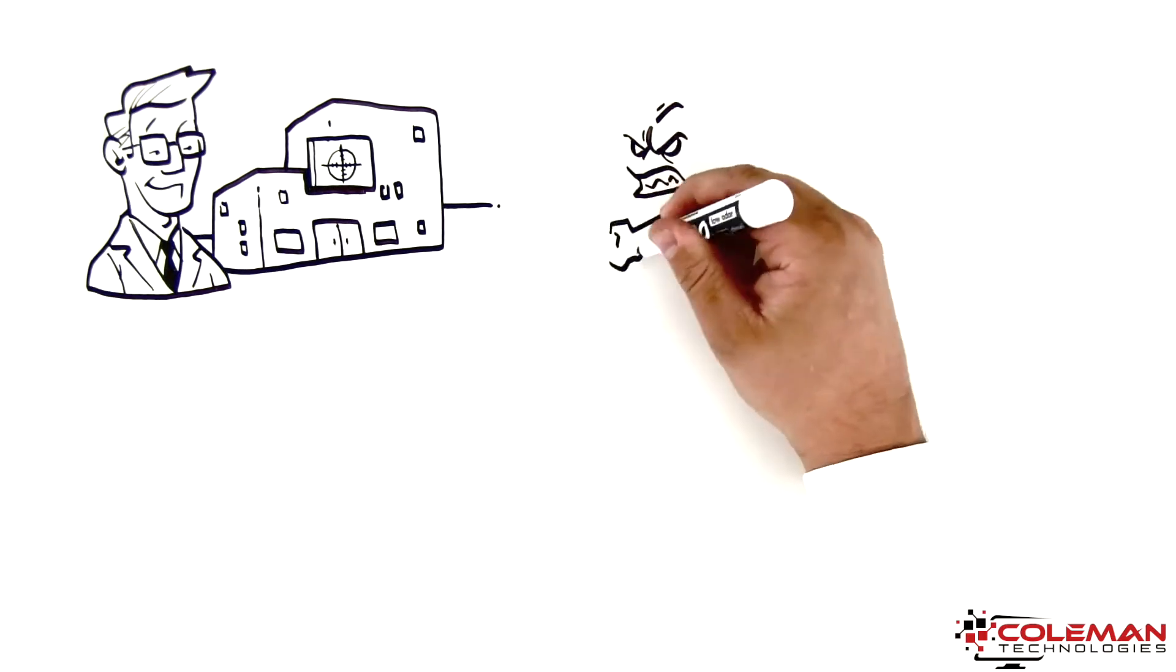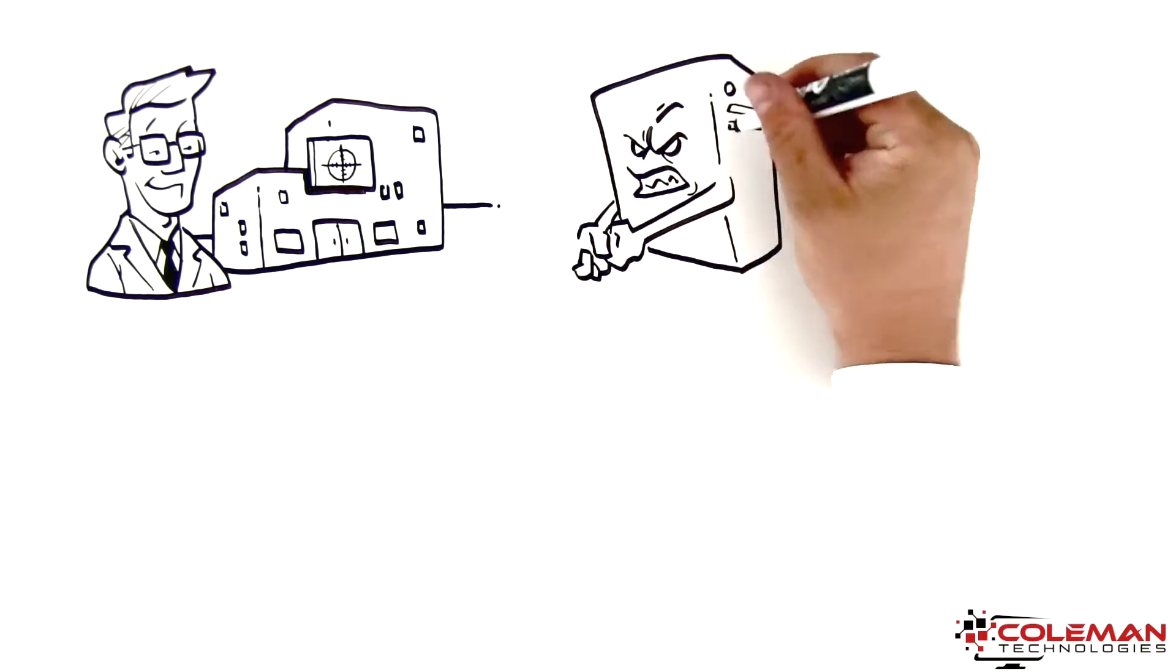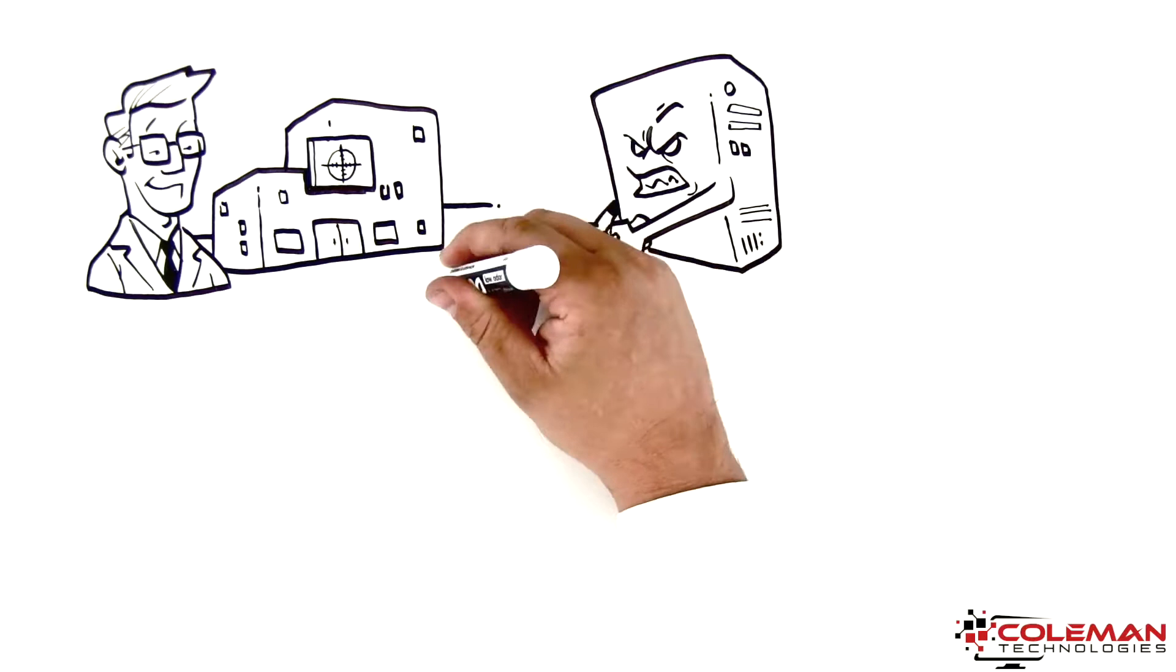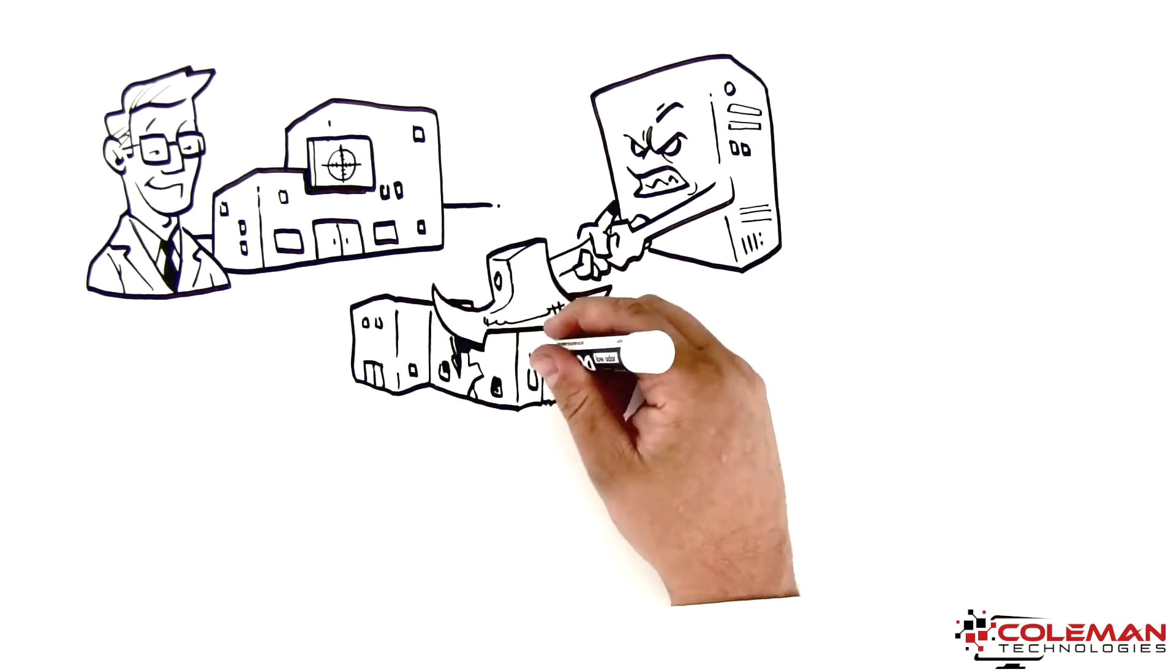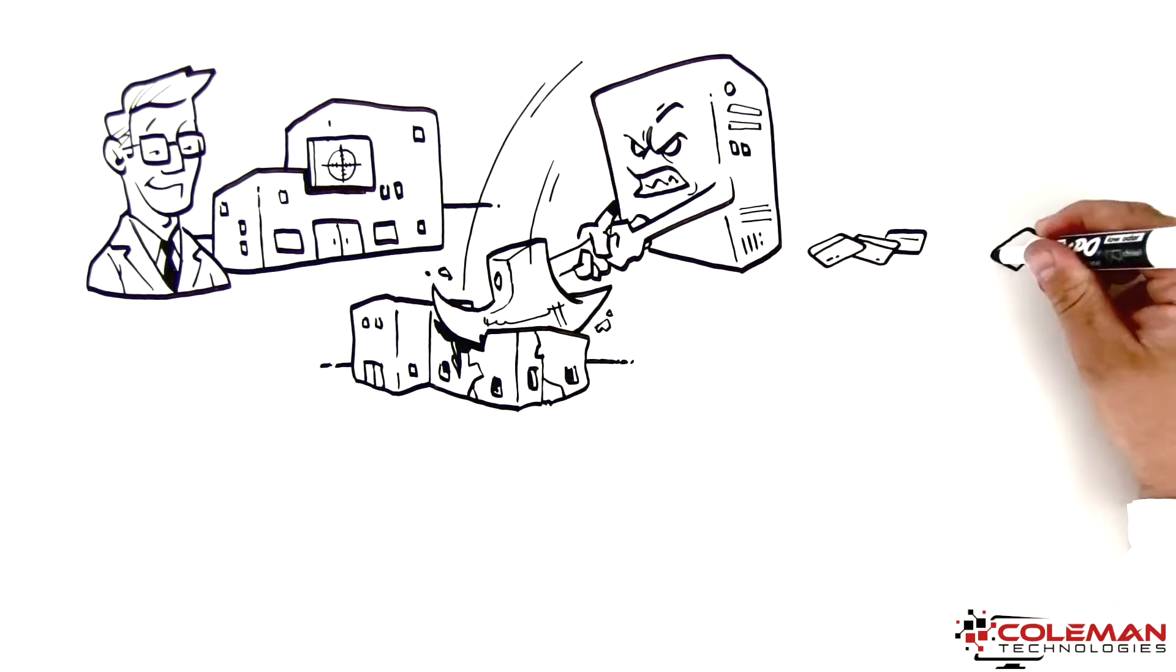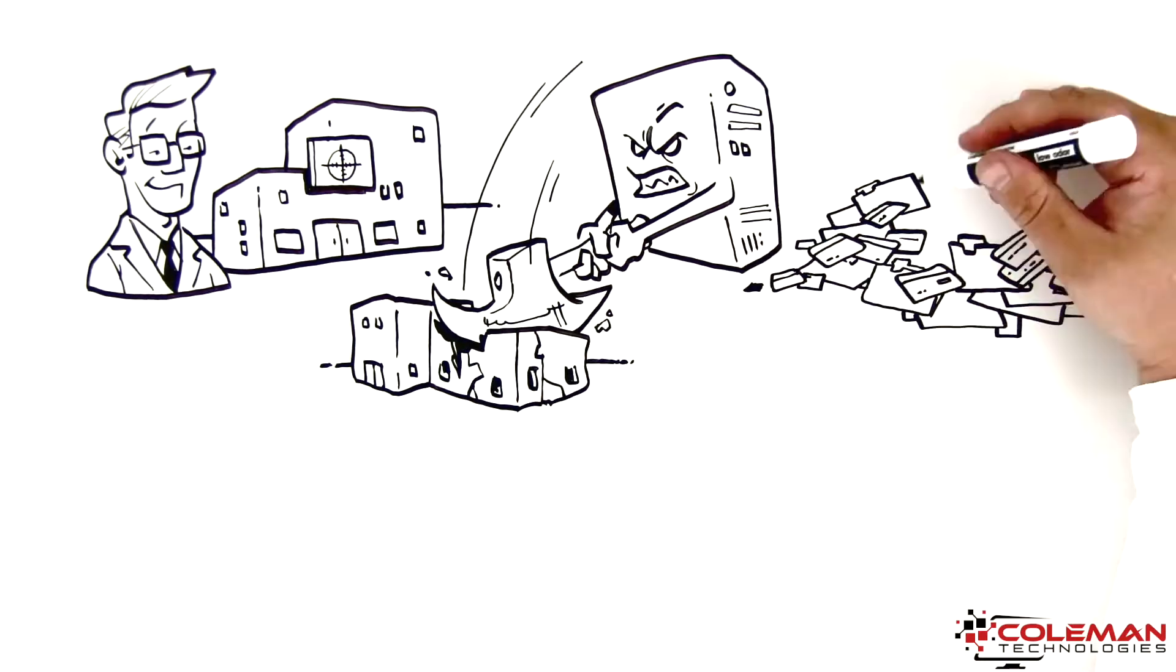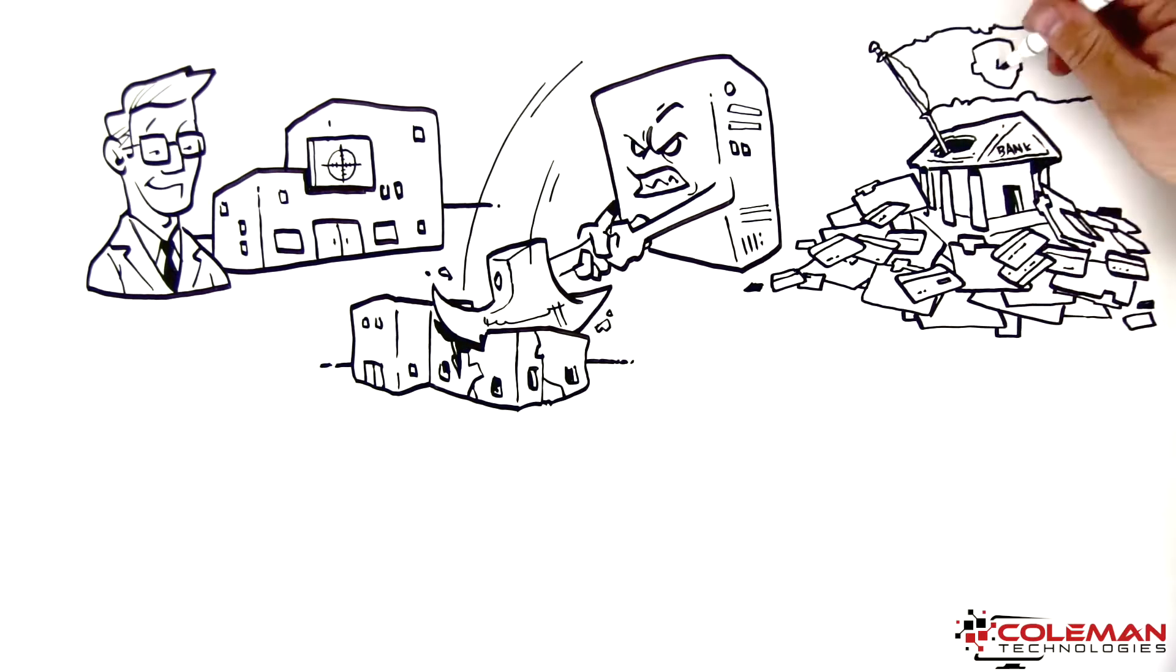Right now, extremely dangerous and well-funded cybercrime rings in China, Russia, and Ukraine are using sophisticated software systems to hack into thousands of small businesses like yours to steal credit cards, client information, and swindle money directly out of your bank account.